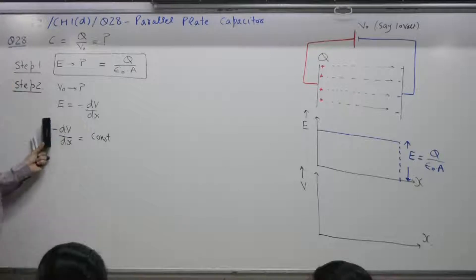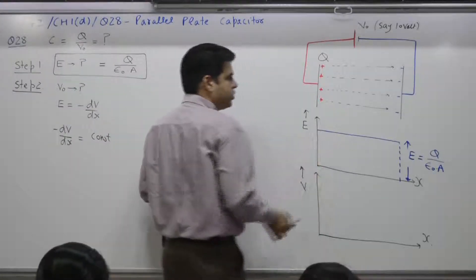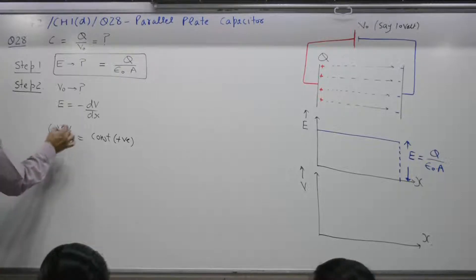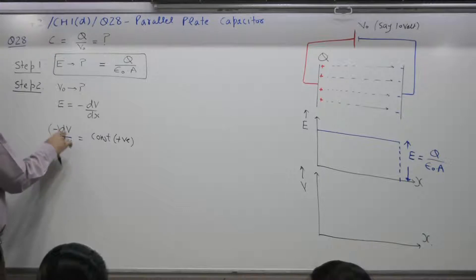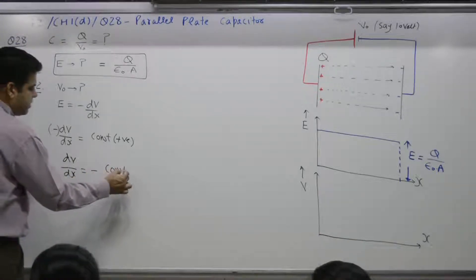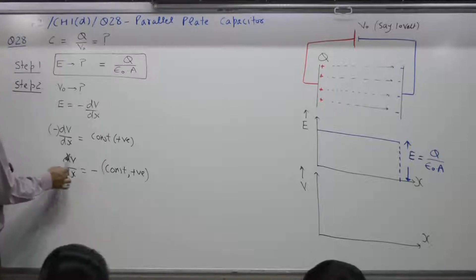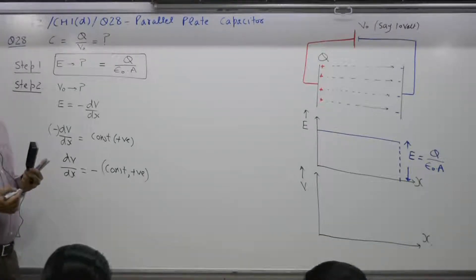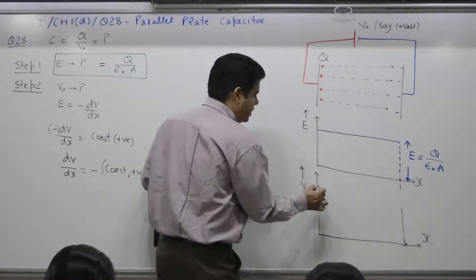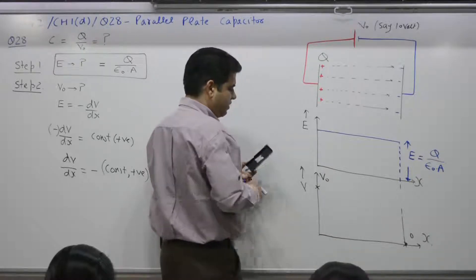What does it mean? dV by dx means slope. If slope is constant and E is a positive constant, then dV by dx is a constant equal to minus some positive value — for example minus 2, minus 3, minus 4. dV by dx is slope. If the slope of a graph is constant, that means it is a straight line. So if this point is at potential V naught and this point is at potential 0, the graph comes out to be a straight line.